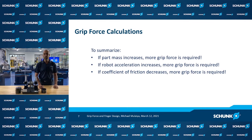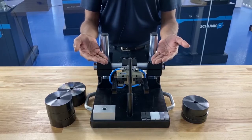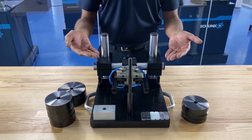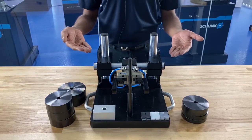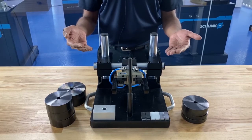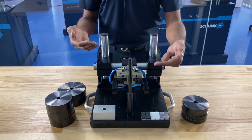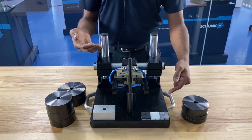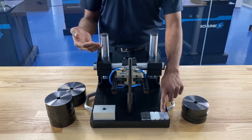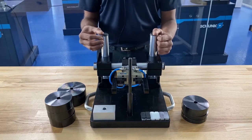I will demonstrate how coefficient of friction influences the maximum mass a gripper can maintain. Here is a PGN Plus P 80-1 parallel pneumatic gripper, shown mounted to our static grip force demonstration assembly. This assembly allows us to test how the coefficient of friction of various finger insert materials affects how much mass a gripper can support. In this demonstration, the gripper, the actuation pressure, and the finger length will be held constant. I will test three finger insert materials: aluminum, Delrin, and HKI. With each finger insert material loaded, I will actuate the gripper and test how much mass the gripper can hold against gravity.